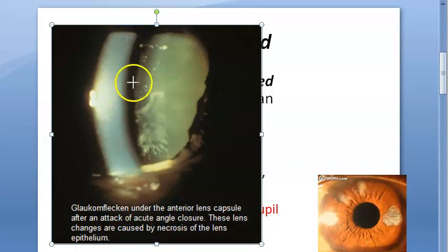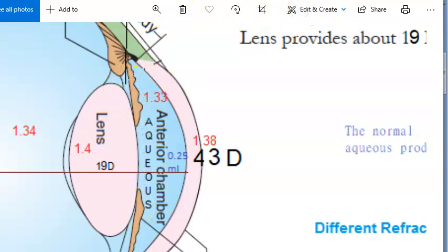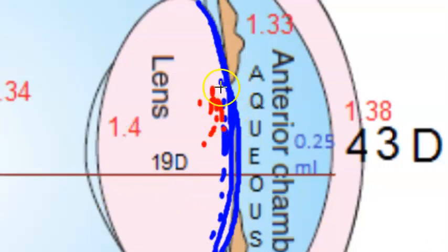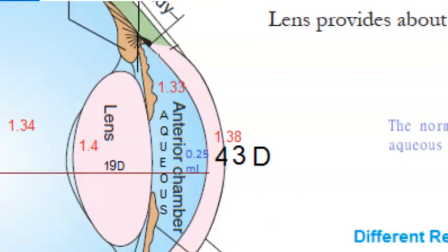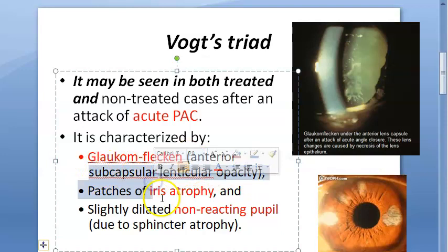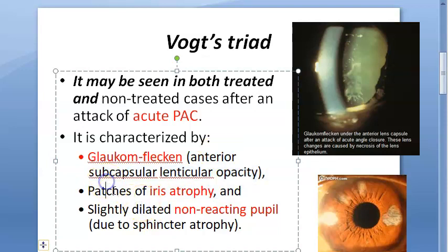The glaukomflecken is located inside the anterior capsule of the lens. The lens epithelium necrosis causes this opacity to appear inside the anterior capsule. Glaukomflecken is defined as an anterior subcapsular lenticular opacity — it is subcapsular, specifically inside the anterior capsule.